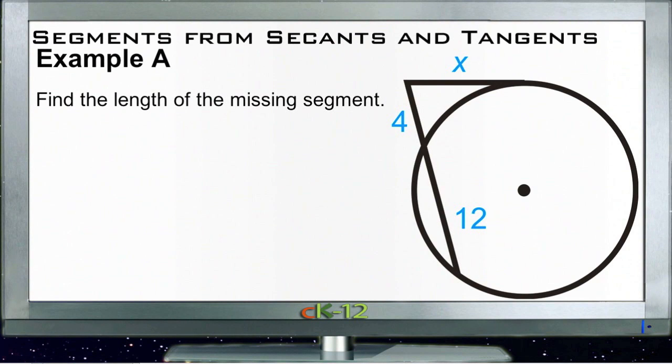All right, Example A says find the length of the missing segment x, so that's right here. We're finding the length of the segment from the vertex to this tangent point here. Based on our theorem, we can say that...